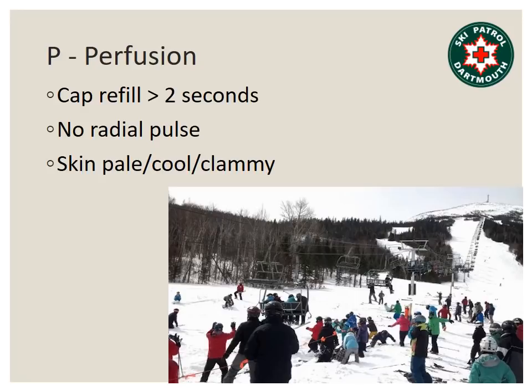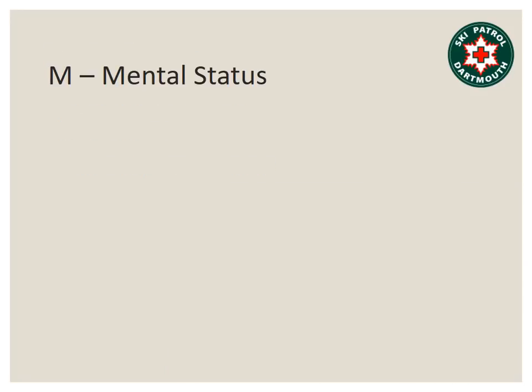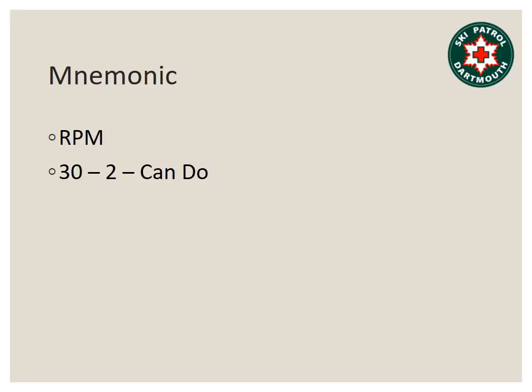If they have adequate breathing and adequate perfusion, we go to M, which stands for mental status. We need to determine whether the patient can follow simple commands like 'open your eyes,' 'squeeze my hands,' or 'what's your name?' If they can do that, they've passed RPM and they get tagged yellow — delayed. These are people who have a broken leg and can't walk but are not going to die. Anyone who is unconscious but breathing is automatically red because they will fail mental status. An easy way to remember this for adults: RPM is 30-2-can do — 30 breaths per minute, capillary refill less than two seconds, and can they follow simple commands.